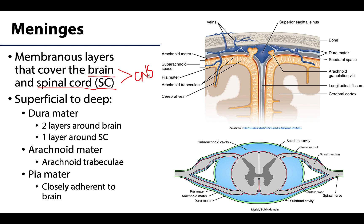The major function of these layers is to support and to protect the central nervous system, and there are going to be three main layers. From superficial to deep, there is the dura mater, which is going to be the most robust — it literally means "tough mother." So when we do the craniotomy you will see it will be the first thing you see; it is quite opaque and very obvious.